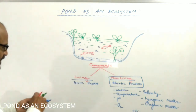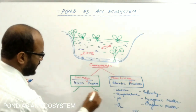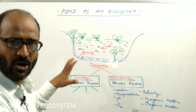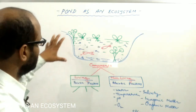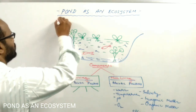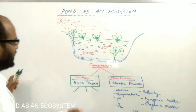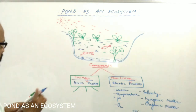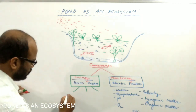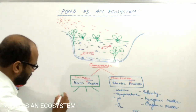The pond has biotic factors, which you can divide into three groups. In the pond, those green plants, algae, or phytoplankton present actually prepare food by the process of photosynthesis by trapping solar energy or radiant energy. So such green plants become the producers in the pond.